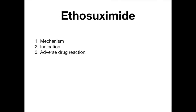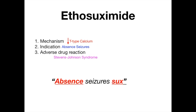Now we're going to talk about ethosuximide. The mechanism of ethosuximide is that it inhibits the T-type calcium channels. Just remember the word calcium — if you see calcium, that's the answer. The indication, which is really high-yield, is absence seizures. Absence seizures are always treated by ethosuximide. The main adverse drug reaction to know is Stevens-Johnson syndrome. The mnemonic is really easy: 'absence seizures suck' — 'absence' for absence seizures and 'sucks' or 'suximide' for ethosuximide.